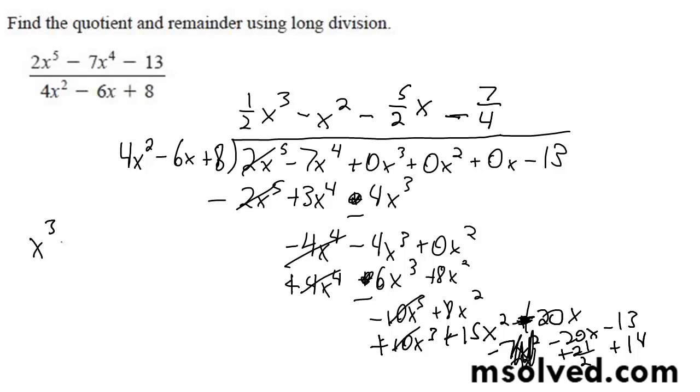Our final solution is x cubed minus x squared. And this is actually over 2. Minus 5 halves x, minus 7 over 4. Plus 19 over 2x minus, or plus 1, and all that right here over 4x squared minus 6x plus 8.